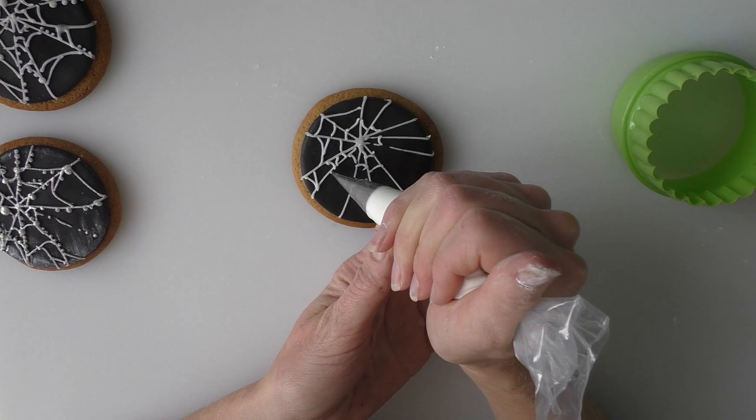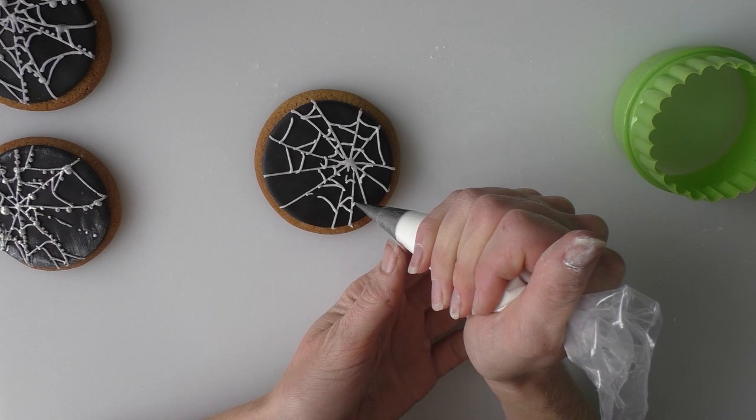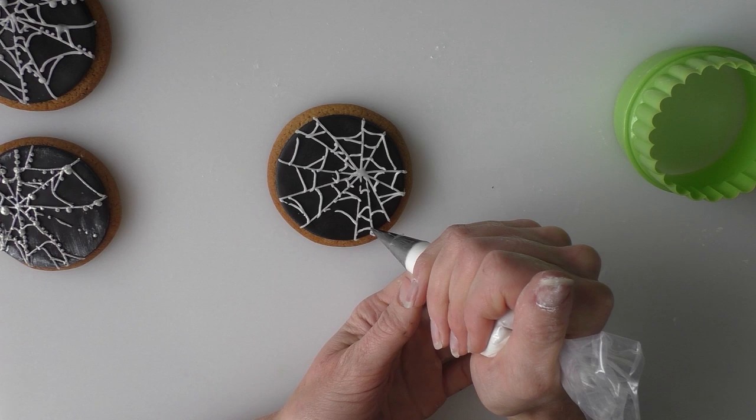I'm not going for a perfectly neat spiderweb on this one. And then add some smaller bits of web coming across the pieces. And it looks good if every one of your cookies is slightly different rather than all being exactly the same.